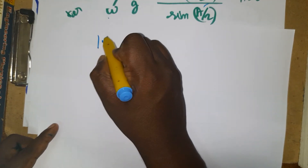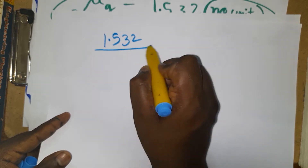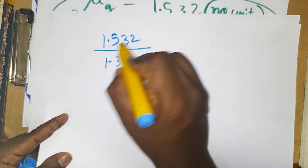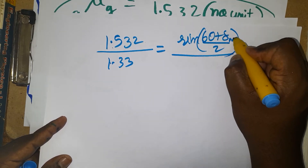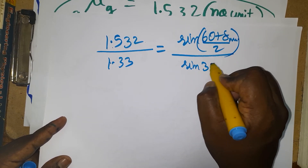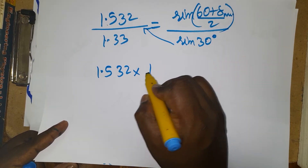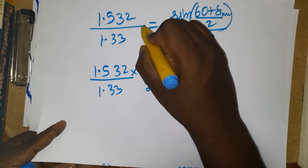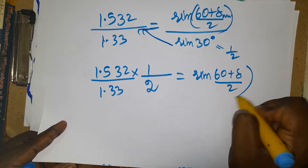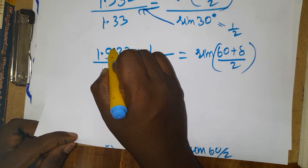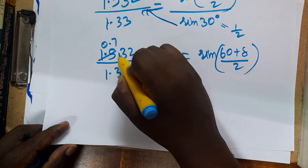Substituting: 1.532 (air to glass) divided by 1.33 (air to water) = sin((60 + δ_min)/2) divided by sin(30°). Since sin(30°) = 1/2, moving it across gives: 1.532 × (1/2) divided by 1.33 = sin((60 + δ_min)/2). This simplifies to 0.766 divided by 1.33 = sin((60 + δ_min)/2).